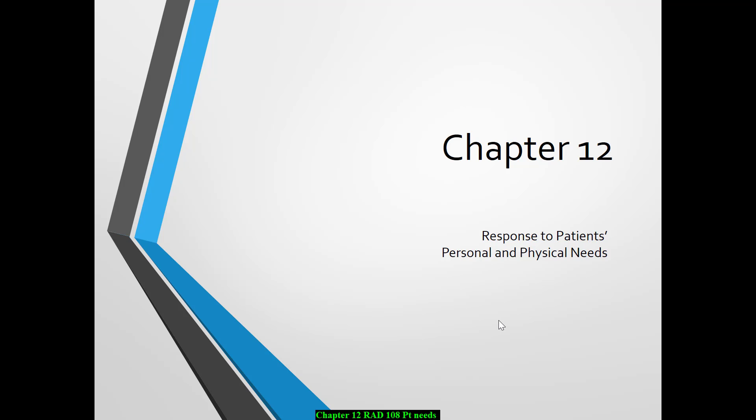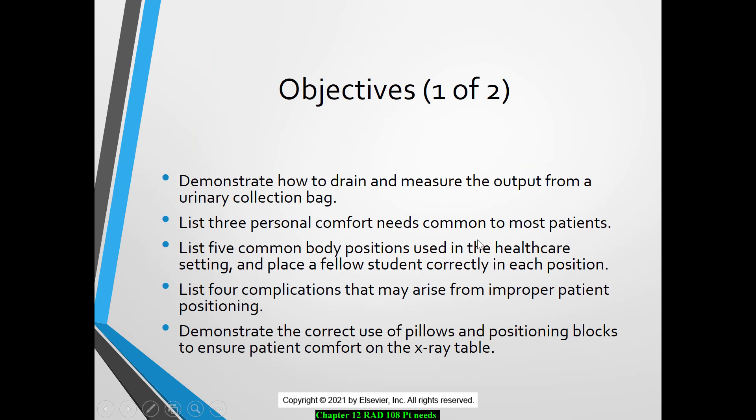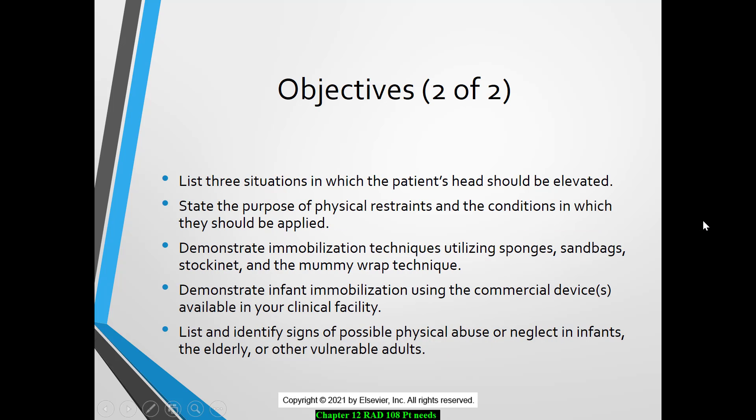Hi and welcome to chapter 12. This is where we take a look at patients' personal and physical needs. In this chapter we're going to look at some devices for psychological needs like water, elimination of urine, and Foley catheters. We'll also talk about colostomy bags that you could see on a patient, and then we'll end the chapter talking about elder abuse and child abuse and what symptoms to look for in those situations.